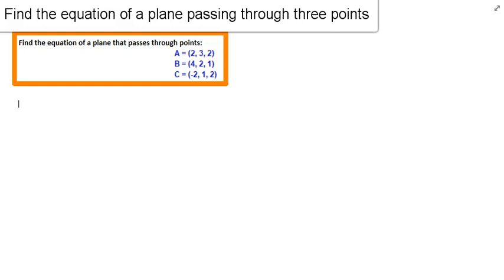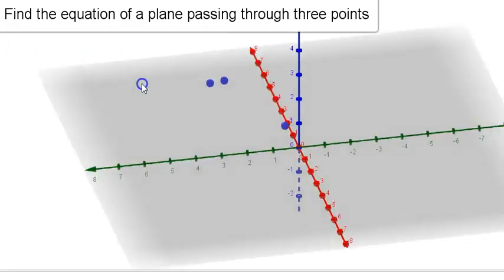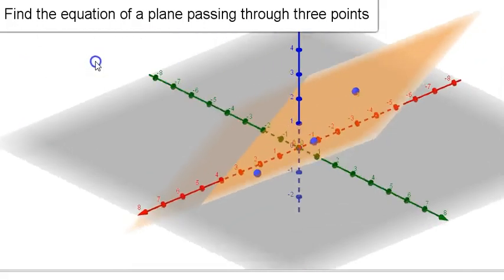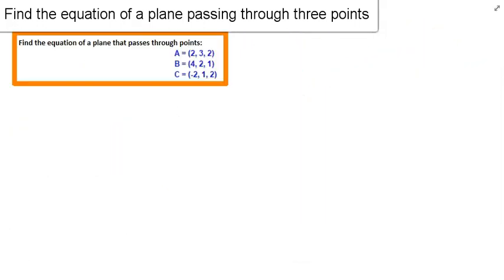Alright, so we're going to be finding the equation of a line that passes through those three points. Let's take a look at what it looks like. So there are our three points in 3D space, and there's going to be a plane. We're going to find the equation of that plane.